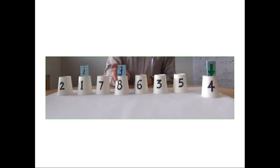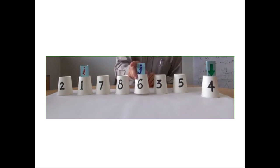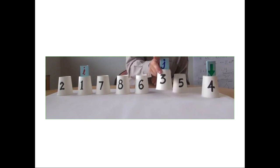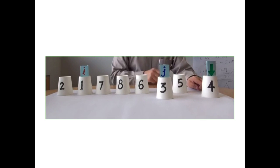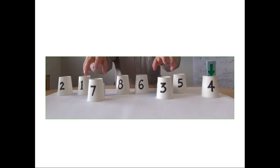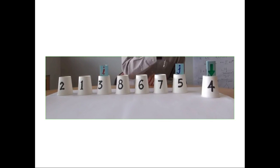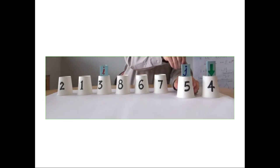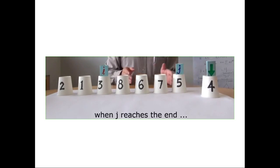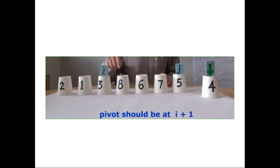Eight will be compared with four — eight is larger than four, so it stays in the same place. Six will be compared with four — six is greater, so it stays in the same place. Three will be compared with four — three is lesser than four, so i is incremented and seven and three will be swapped. Five is already greater than four so there is no swapping. Now j reaches the end, which is the element before the last element.